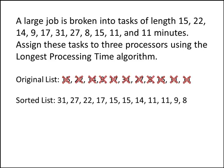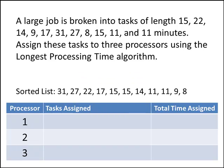Now that we've got our sorted list, we're ready to start assigning these tasks to processors. So let's make a little table here. We've got our three processors and a space to put the tasks that have been assigned to those processors. Since the longest processing time algorithm tells us to assign each task to the processor with the least amount of time assigned to it, we'll keep track of how much total time we've assigned to each processor as we go. Right now we haven't assigned any tasks yet, so the total amount of time assigned to each processor is zero.